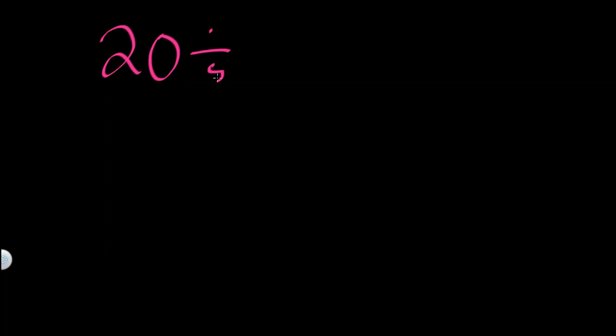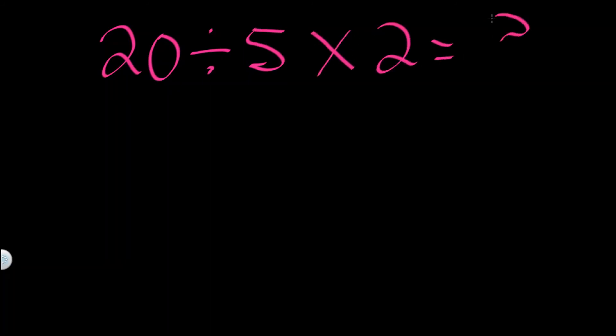This is the rule that you apply. For 20 divided by 5 times 2: when you have multiplication and division, you work from left to right. Whichever operation comes first from left to right is the one you start with. In our case, we start with division because division comes first, and multiplication comes later.